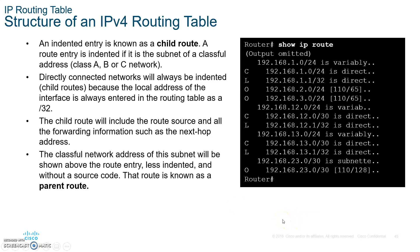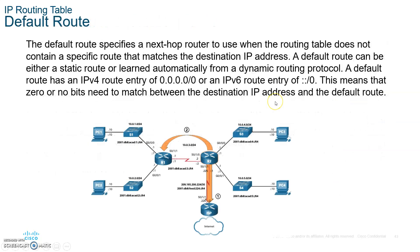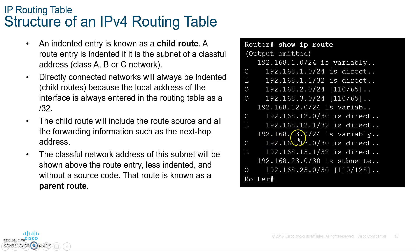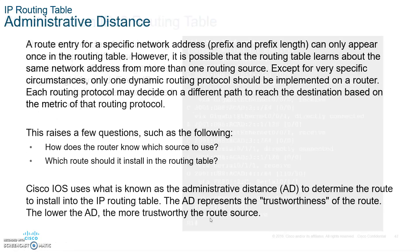In IPv4 routing tables, entries are organized in parent-child hierarchy. The parent is the classful network and the children are the subnets. The router must first match the parent entry; if the parent doesn't match, none of the child routes are checked and the router moves to the next parent. If the parent matches, then the router checks the indented child entries for a more specific match. In IPv6, this parent-child structure does not exist — every entry is checked step by step.